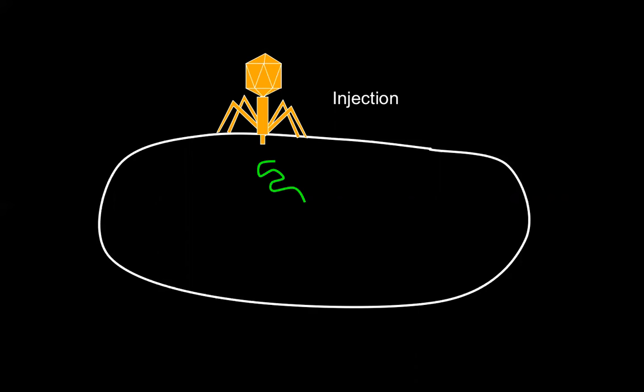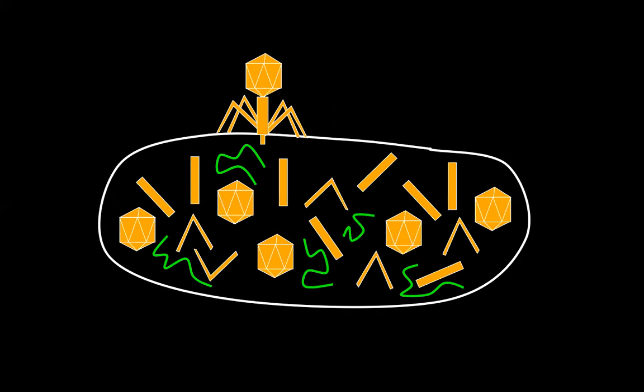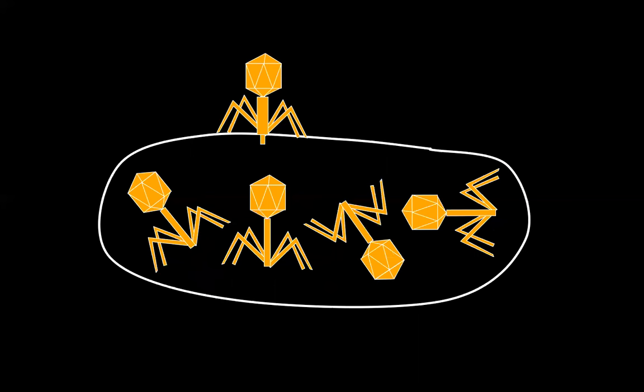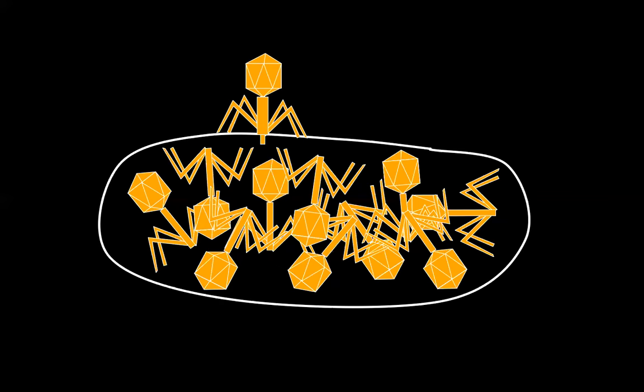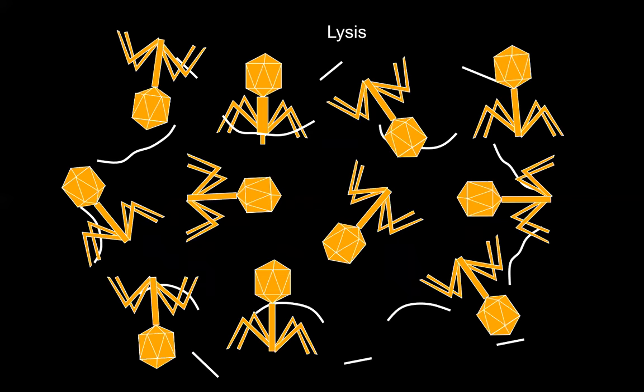Once it's inside the host cell, ribosomes are going to use the transcribed DNA or messenger RNA to make viral proteins. Cellular proteins will also replicate the virus's genetic information. Once all the bits and pieces of these viruses are produced, they're assembled inside the host cell, and this process continues until the cell explodes. We call this cell lysis, and the cell is now dead.